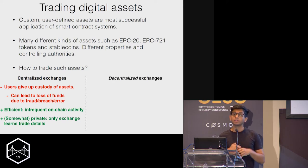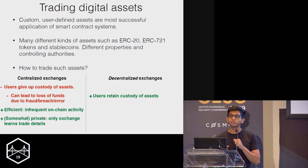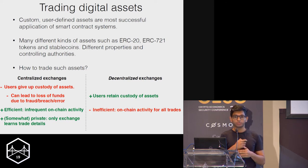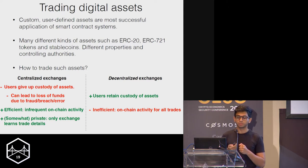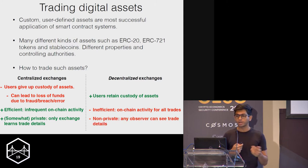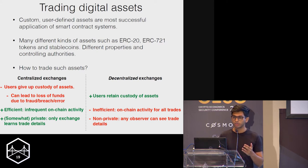People have come up with so-called decentralized or non-custodial exchanges, where users retain custody of their assets throughout the trading process — there's no point during trading where they give up custody to a third party. But it has downsides: for every decentralized exchange today, you have to post an on-chain transaction whenever you make a trade. So your trading capacity is only as large as the transaction throughput of the chain, and any observer can see the transaction for every trade, revealing arbitrary trade details.